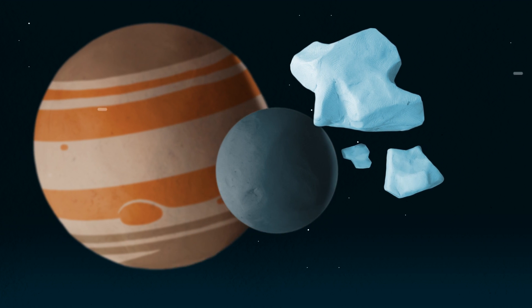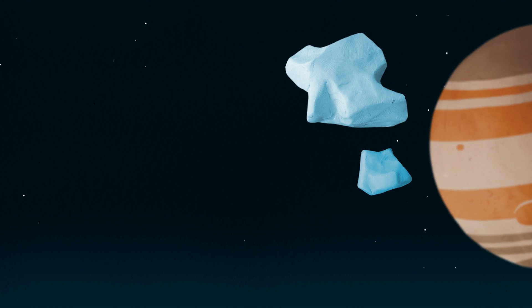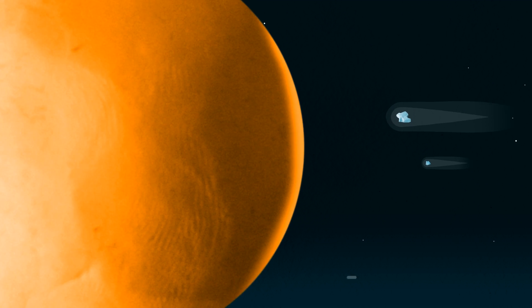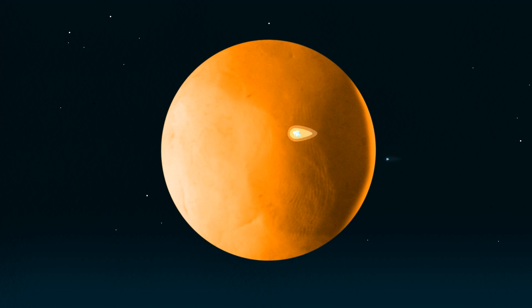Some collide with other objects and get smashed to bits. Others head towards the Sun and form long, beautiful tails as their icy surfaces warm up. Here they will either fall into the Sun, never to be seen again, or they will survive and speed back home beyond the Snowline.